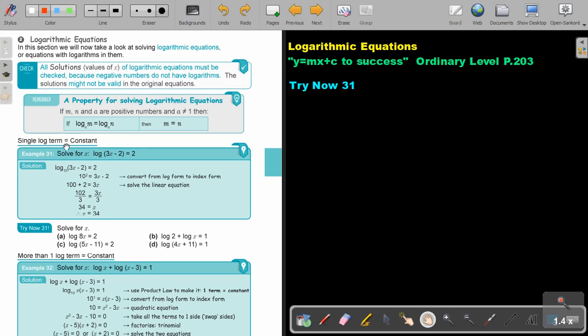If there's a single log term and it's equal to a constant, just a number, then I can go from log to index notation. Remember, there's a 10 if there's nothing, so I write the 10 and I just basically swap that to two sides and then I will get this and then I will just simplify, divide 3, divide 3 and that will be my final answer.